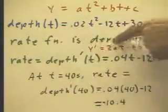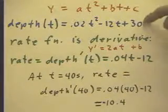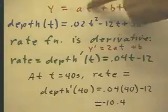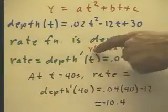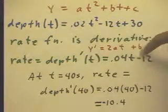The rate function is the derivative of this function, and we're asked to find the rate function. So we have to observe that the rate function is the derivative. In red, I've written up here that if y equals at squared plus bt plus c, here we have the associated rate function y prime equals 2at plus b that we've derived.